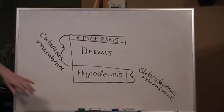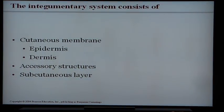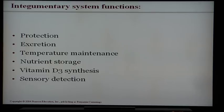In these layers we have some accessory structures, including things like glands, nails, and hair. The subcutaneous membrane, also known as the hypodermis, acts as a great insulator. We'll look closer at the subcutaneous membrane shortly, but first let's talk about the functions of the skin. The integumentary system functions in protection — the main reason we have skin is to protect us from the external environment.